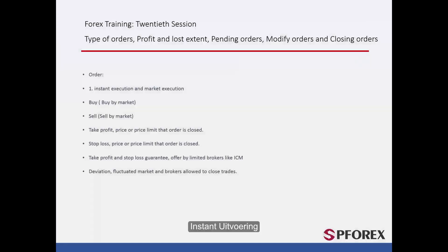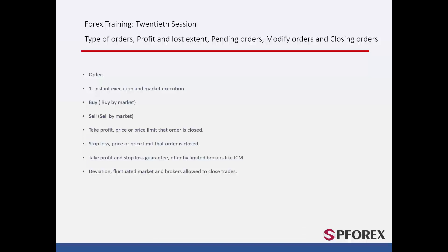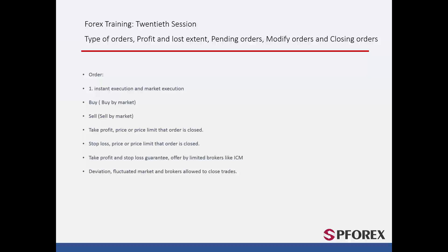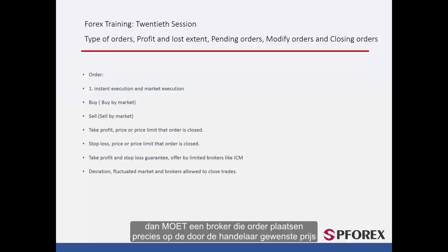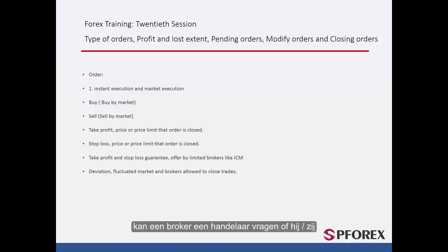Orders can be classified into two types on the basis of their execution method: instant execution and market execution. If a broker provides instant execution orders and a trader wants to order a trade on a symbol at an exact price, then the broker must place that order exactly on the trader's desired price. If an order cannot be taken, a broker may ask the trader whether he or she would prefer to open the order at another adjacent price.